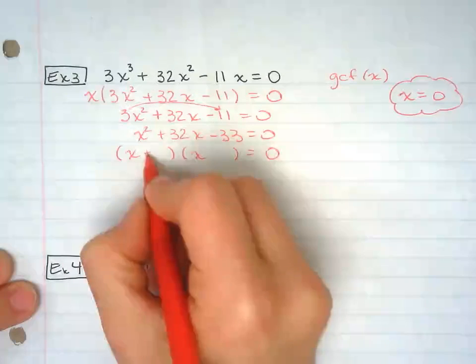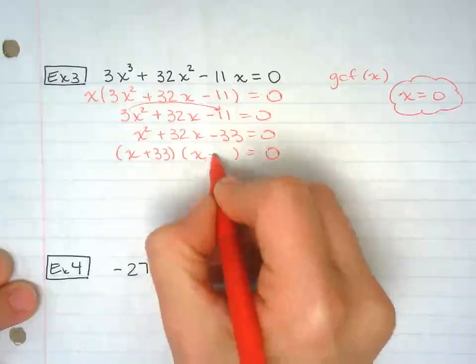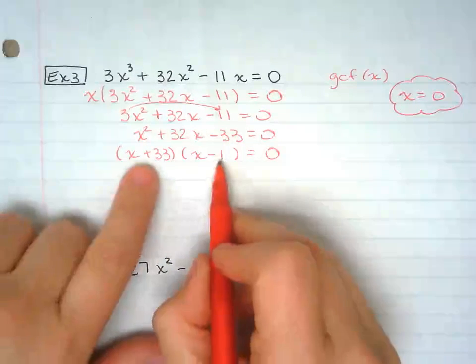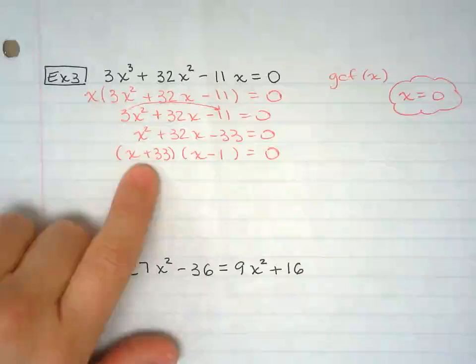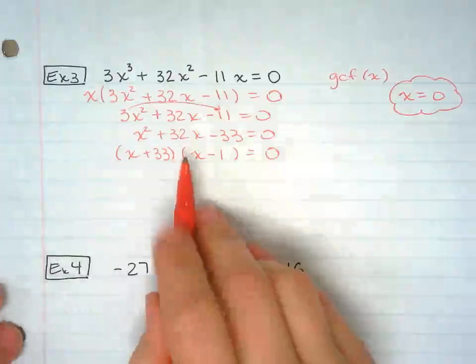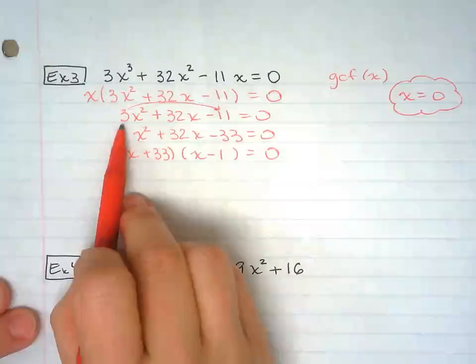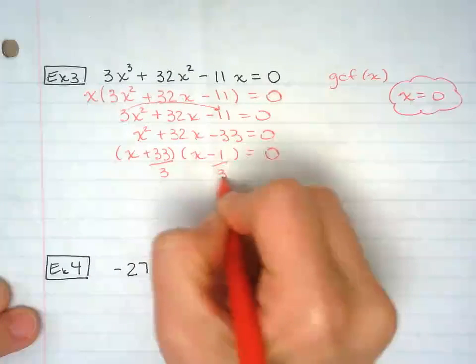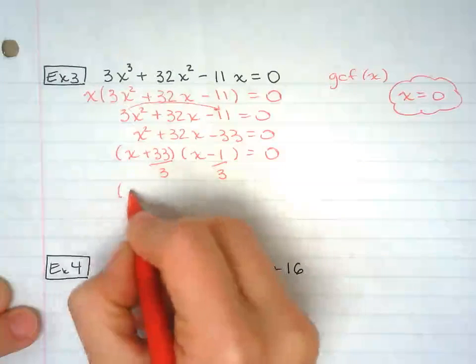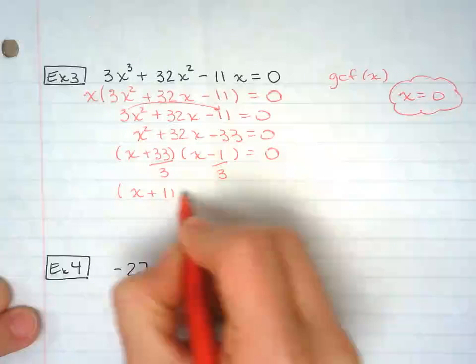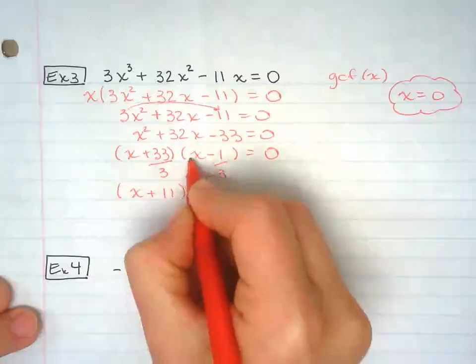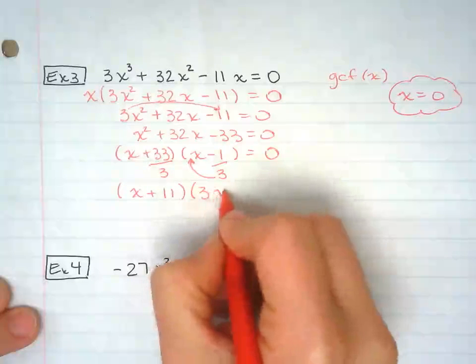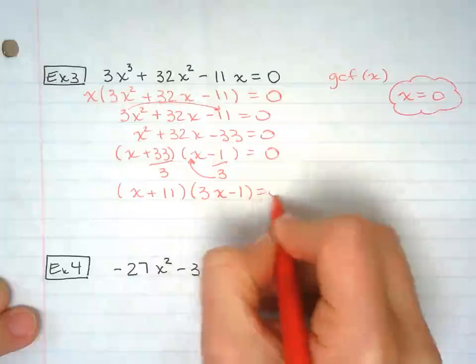I'm going to factor mentally. So positive 33 and negative 1 multiplied, I get negative 33. When I add them together, I get positive 32. And don't forget, because we started out by multiplying by 3, I have to come back here and divide it by 3. Simplify the fraction. I have x plus 11. Since this one, I cannot simplify, it's going to go up in the front. So 3x minus 1 equals 0.